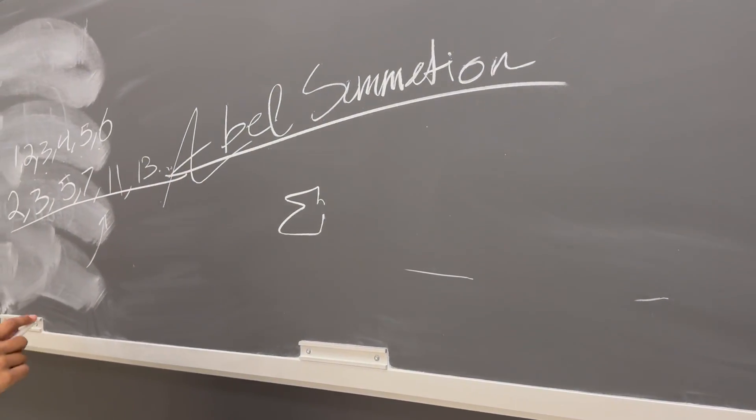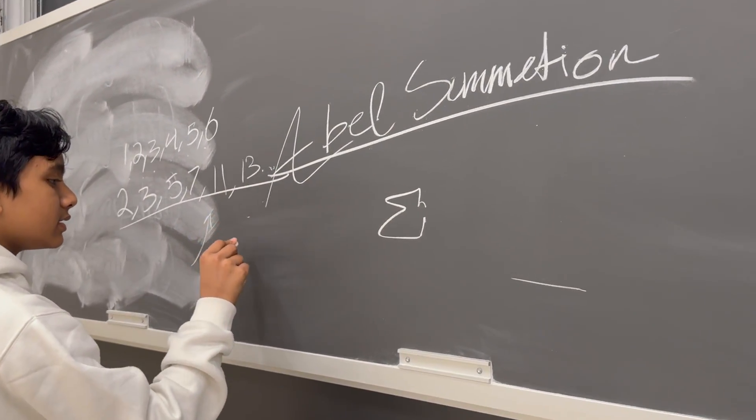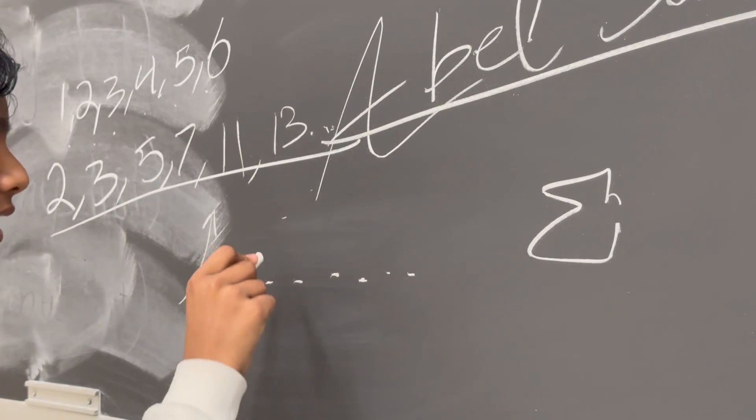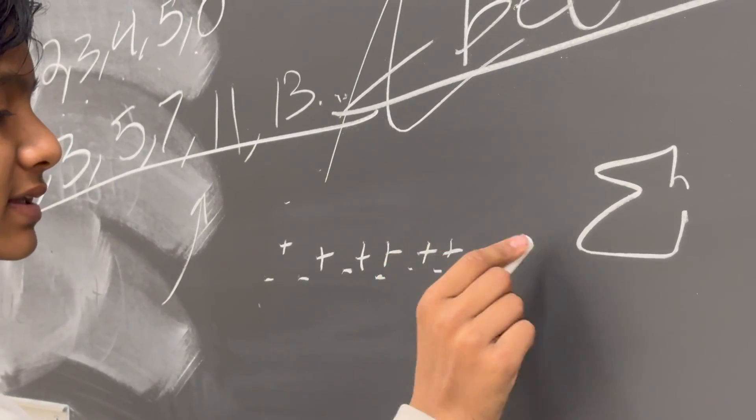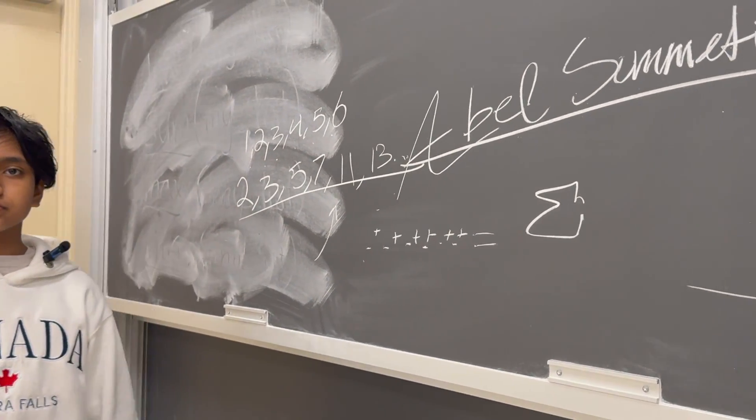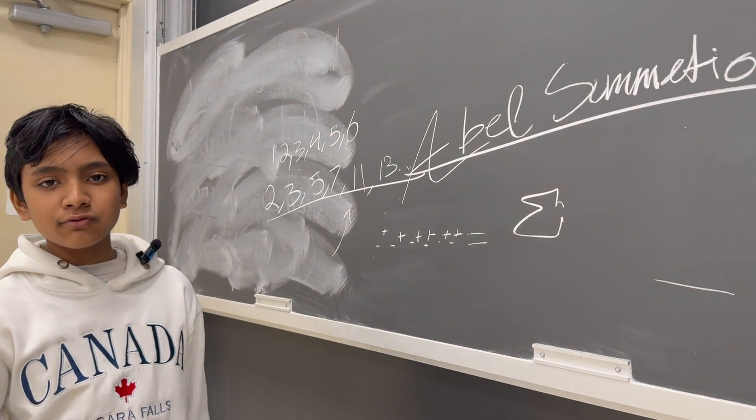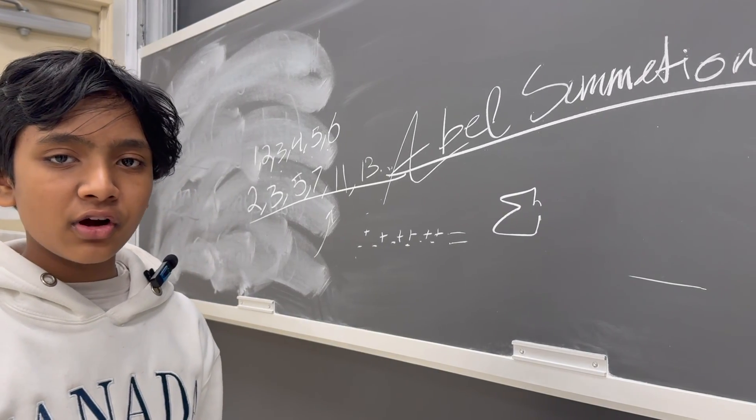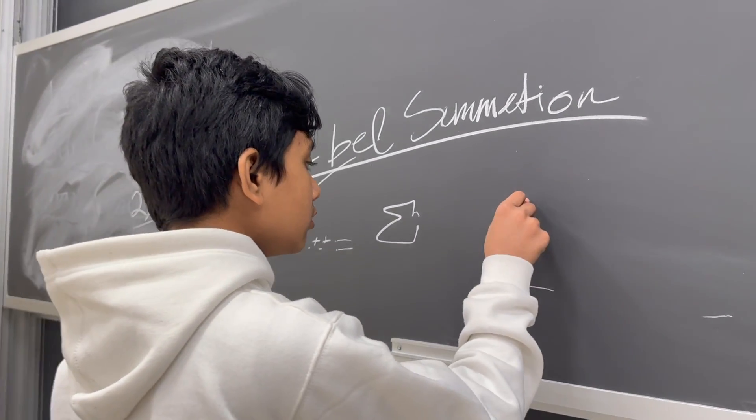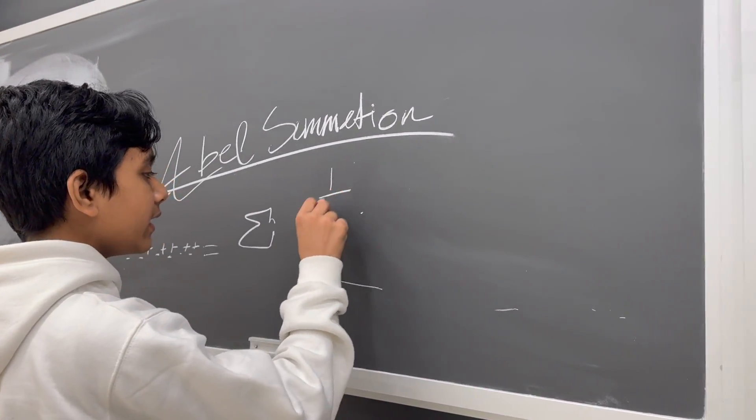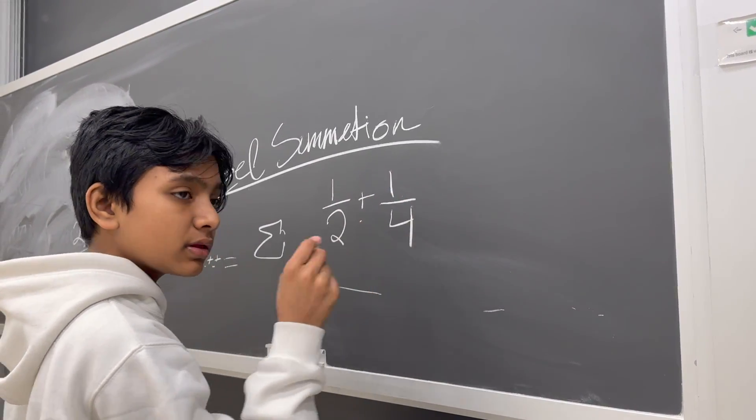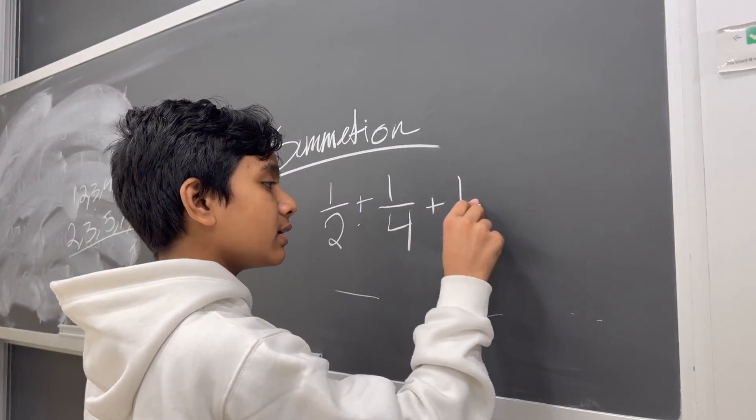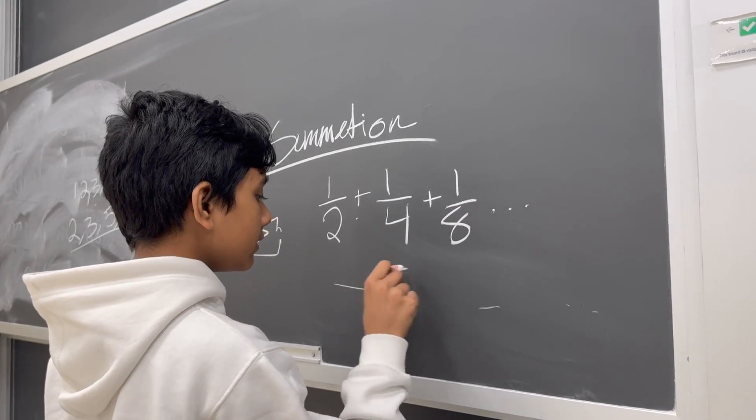Now, the thing is, there are some infinite series that have such small elements that when an infinite amount of them are added up, they actually give you a finite number, which might be useful if you want to know what the limit of a function approaches. One example of this is the inverse powers of 2: 1/2 plus 1/4 plus 1/8, etc., gives you 1.